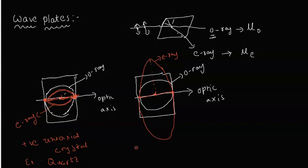The negative uniaxial crystal is one where the elliptical path of the extraordinary ray lies outside the ordinary ray's circular path. According to double refraction, both rays travel at the same speed along the optic axis direction, but in any other direction the speed of the extraordinary ray changes.